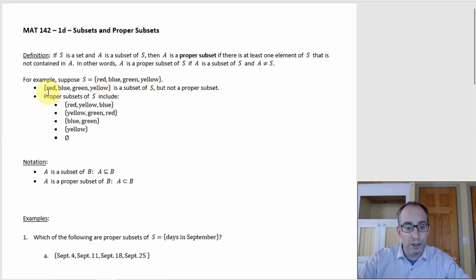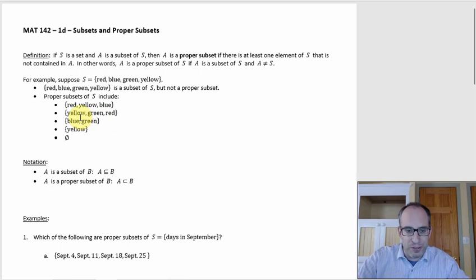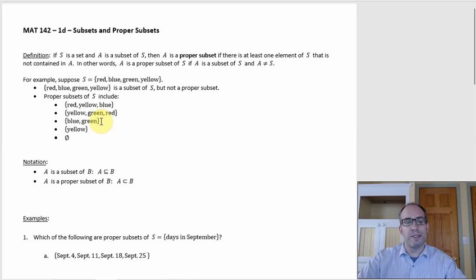Proper subsets: so like the set {red, yellow, blue} is a subset of S and it's proper because S has something not in here — green isn't in here. Similarly, a set without blue would work. There's no restriction that you leave out just one element; you could have a set consisting of just two colors like blue and green. Red and yellow are elements in S but not in that set. The set consisting of just yellow, or just red, just green, or just blue would also work.